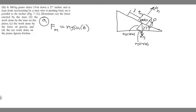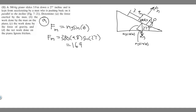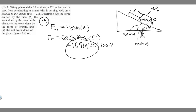Now we plug in the values. Theta is 27 degrees and the mass is 380 kg, so F_m = 380 × 9.8 × sin(27°). That gives us 1,691 newtons, which we can round to about 1,700 newtons. We'll use the more precise value of 1,691 N for the subsequent parts.